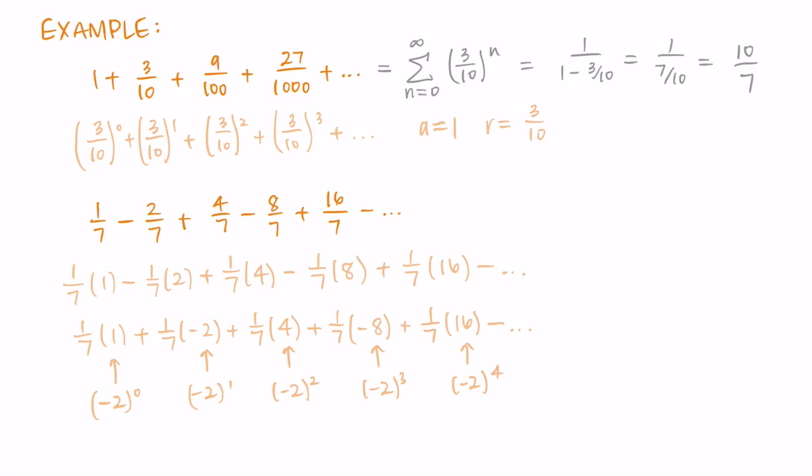So this has an a value of 1/7 and an r value of negative 2. And we can write it in the summation notation as the sum from n equals 0 to infinity of 1/7 times (-2)^n. And because negative 2 is not in the negative 1 to 1 range, I know that this series diverges.